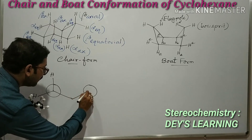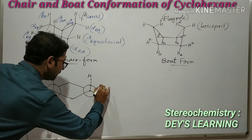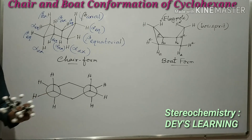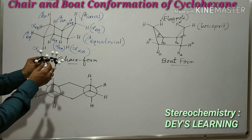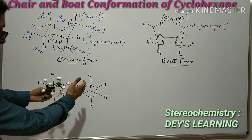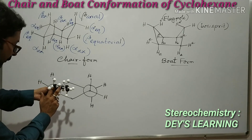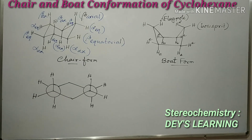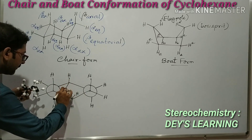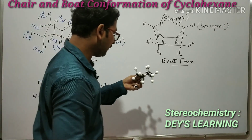In the Newman projection of the chair form: this carbon is behind the plane, this carbon is in front of the plane. There are hydrogen atoms on each carbon. This Newman projection represents the chair conformation — it is a staggered Newman projection.